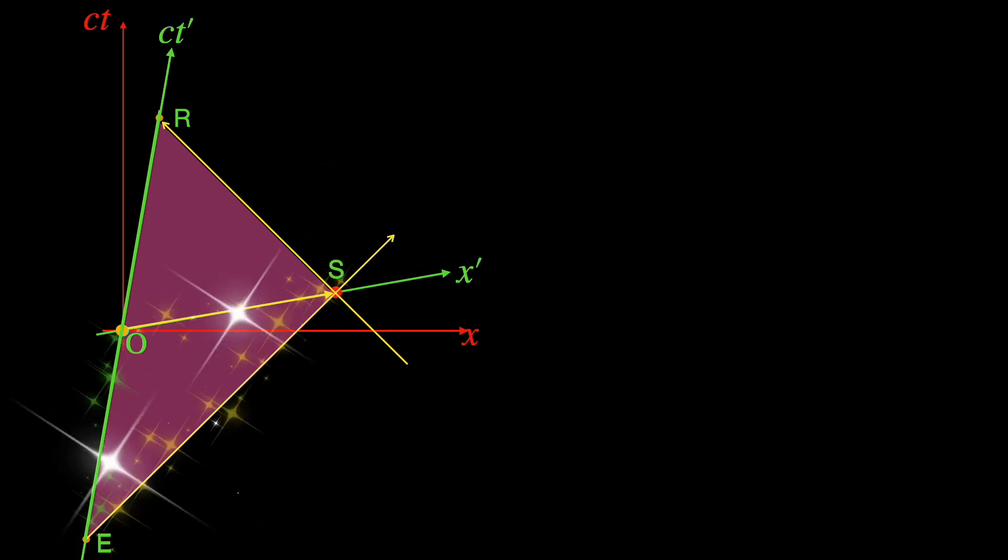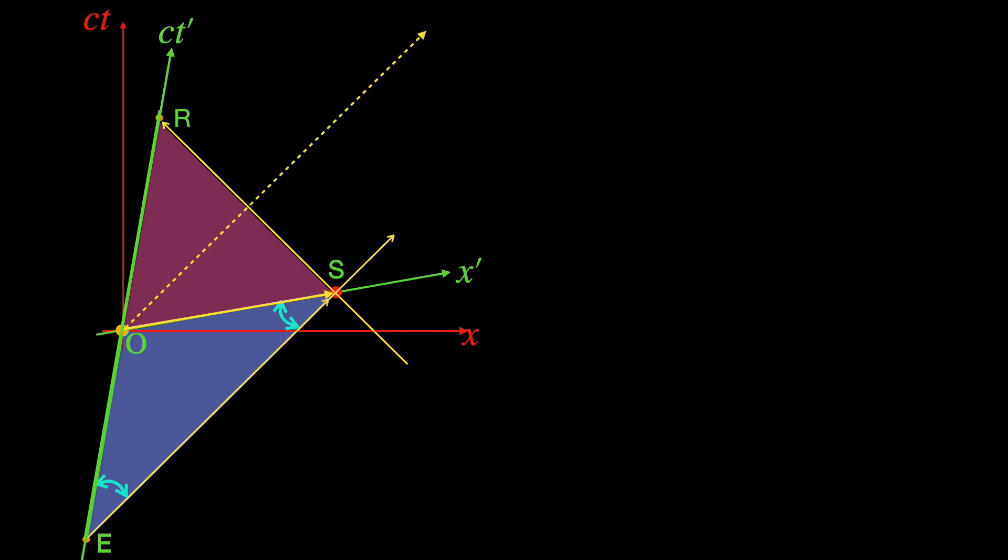Thus OSE is an isosceles triangle with angles facing the two equal arms being also equal. Now if you consider a second photon world line emitted from the origin O obviously parallel to the earlier one emitted from event E, they create a pair of equal angles with the time axis of the moving frame. The space axis of the moving frame also cuts these two parallel photon world lines making another pair of equal angles.